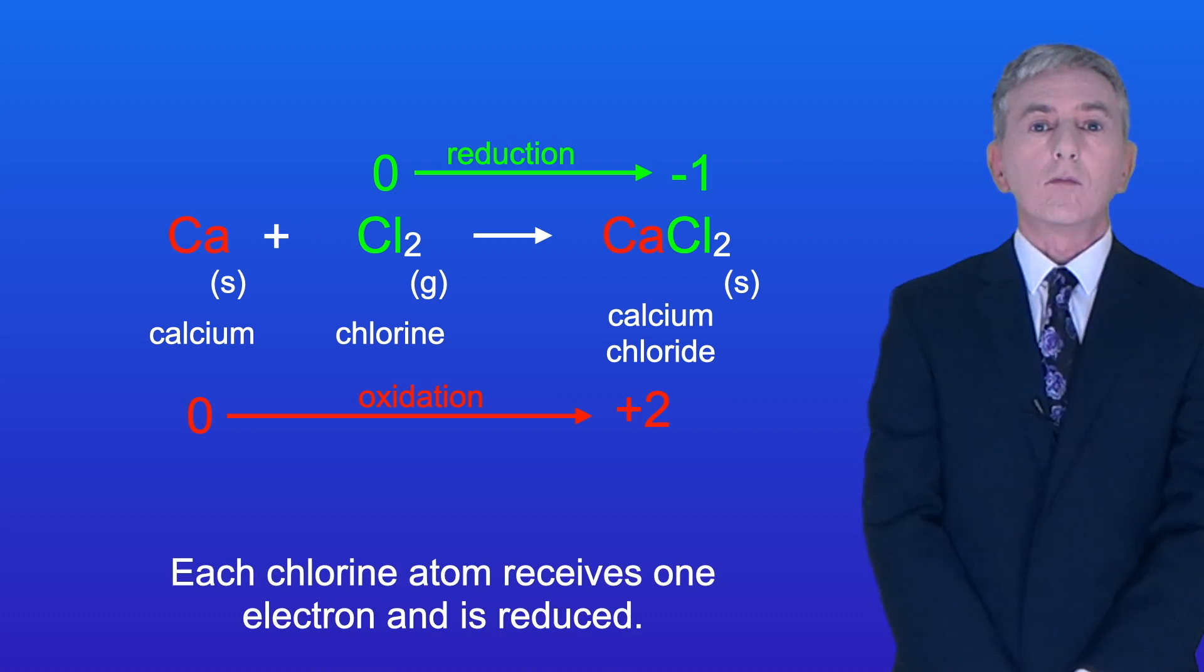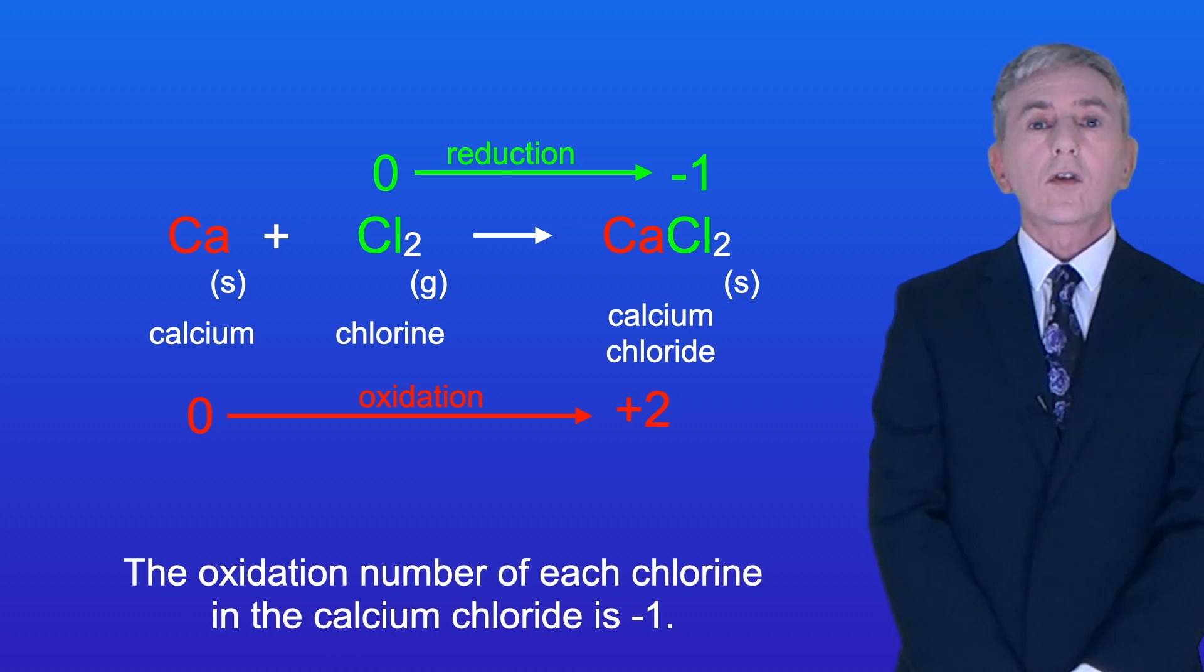Each chlorine atom receives one electron and is reduced. The oxidation number of each chlorine in the calcium chloride is -1.